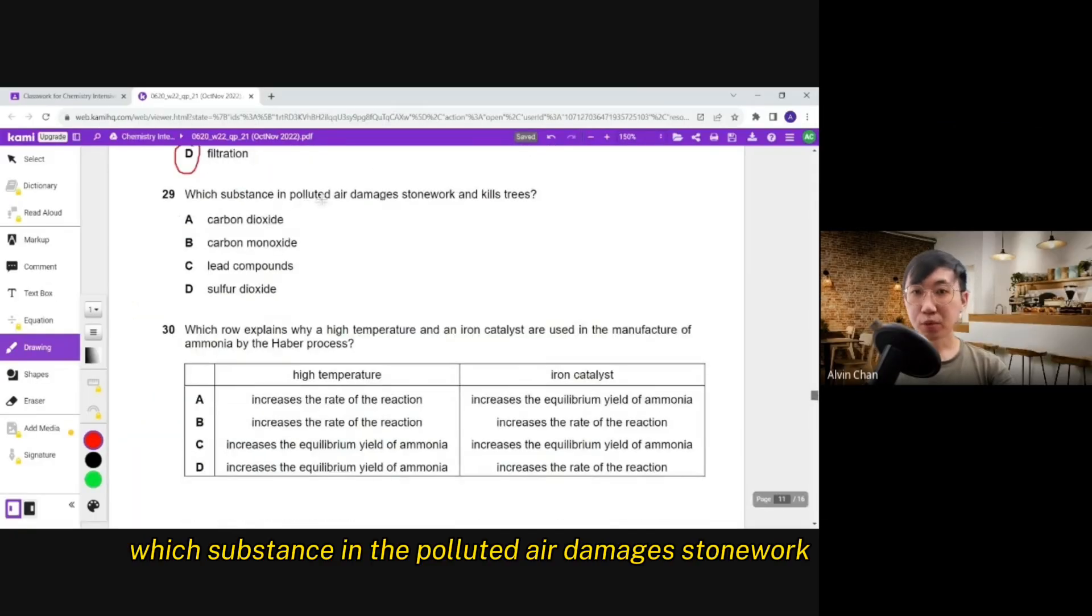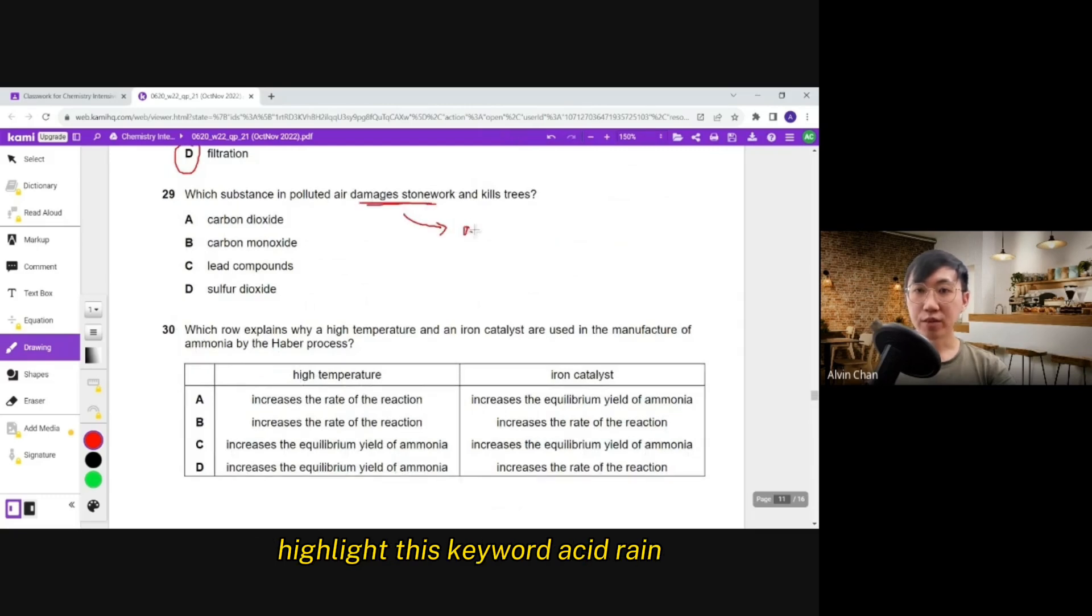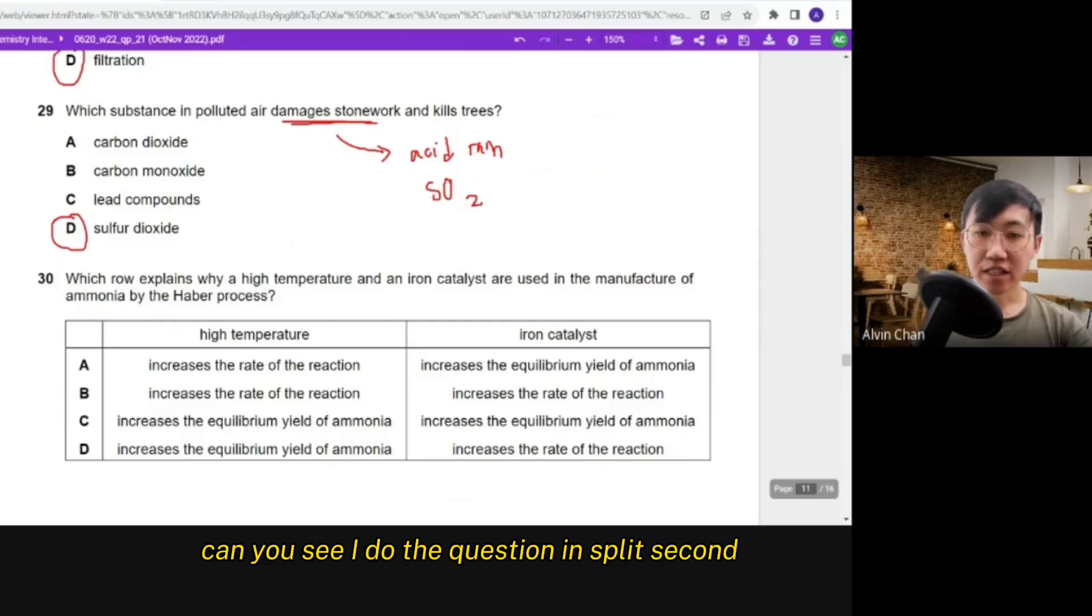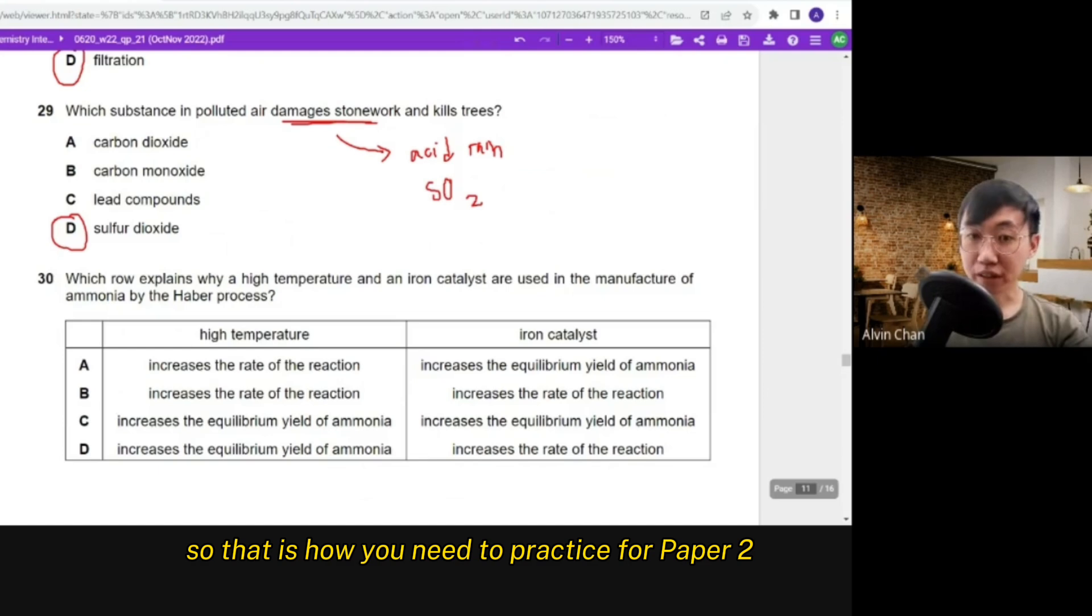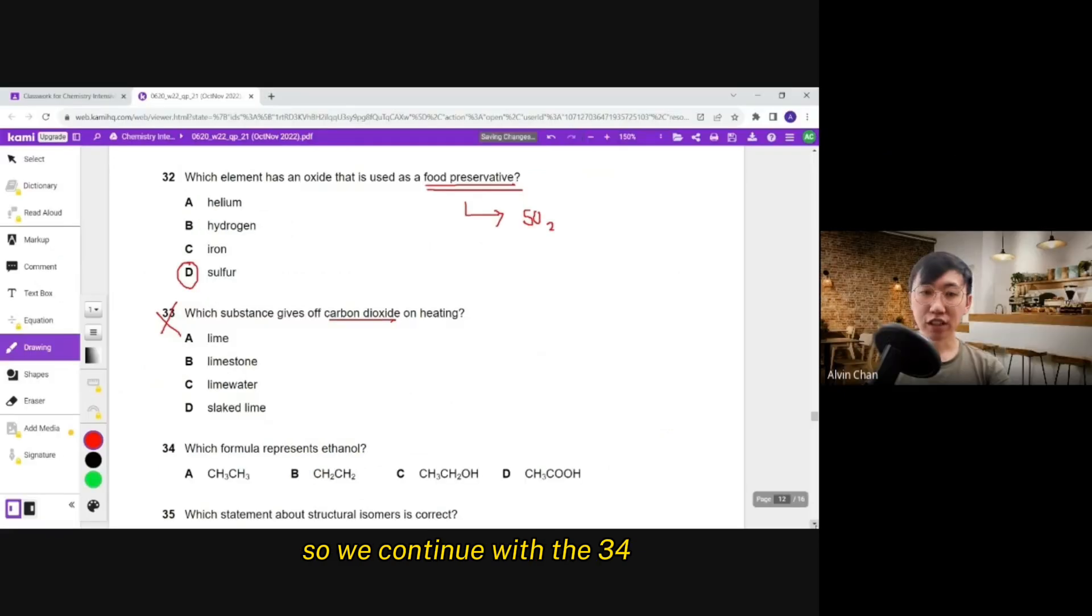Which substance in the polluted air damages stonework? Highlight this keyword. Acid rain. Acid rain. Sulfur dioxide. So once again D. Can you see I do the question in split second underlining damages stonework? Acid rain. Sulfur dioxide. So that is how you need to practice for paper 2. So we continue with 34 now.